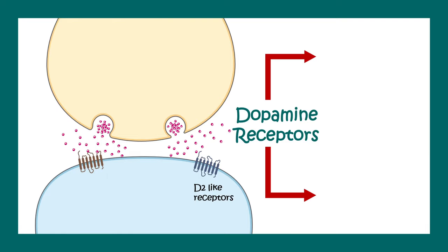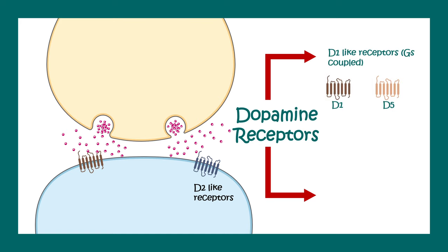Dopamine is released into the synaptic cleft. Once released, dopamine binds to dopamine receptors. Dopamine receptors are metabotropic receptors — that means they are G-protein coupled receptors. There are two categories: D1-like receptors, which involve D1 and D5.